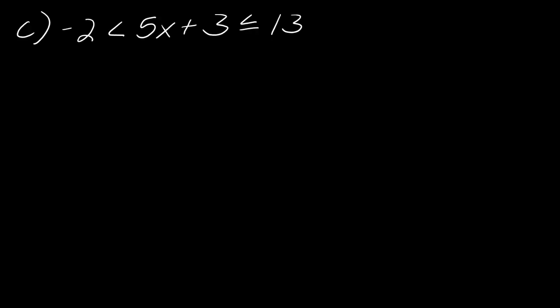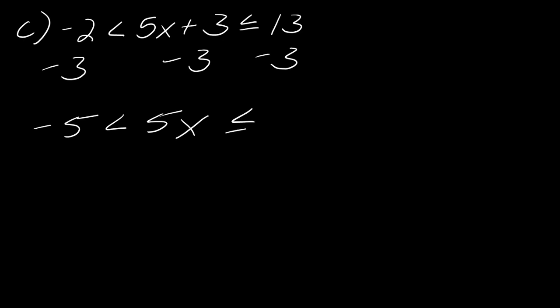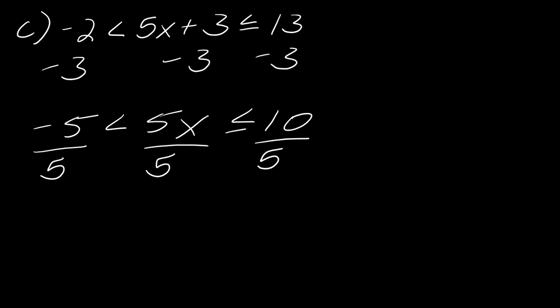Now try one on your own — pause the video, remember math is not a spectator sport. For the practice problem: subtract 3 from all sides to get -5 < 5x ≤ 10, then divide all sides by 5 to get -1 < x ≤ 2.